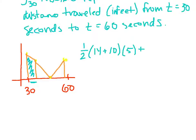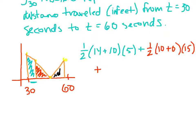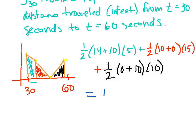We add that to the next trapezoid: one-half times 10 plus 0, times the height which is 15. Then add one more: one-half times 0 plus 10, times 10. When you add all of these together, you get 185 feet.